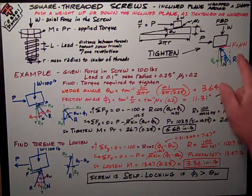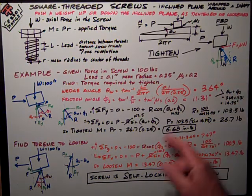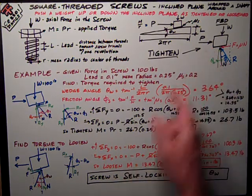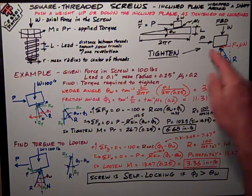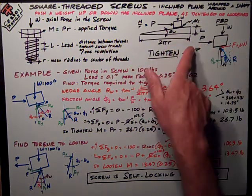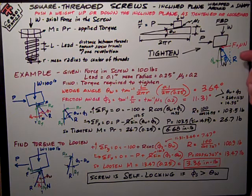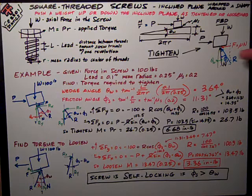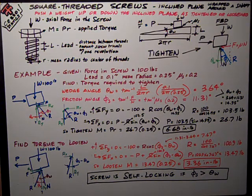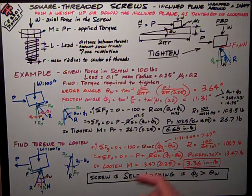I'm going to use this geometry and some of the forces to solve for R and then P. This is to tighten. Note that to tighten, I'm trying to push this block up the hill, so my friction force acts opposite to that direction of movement. So it acts to the left and slightly down.